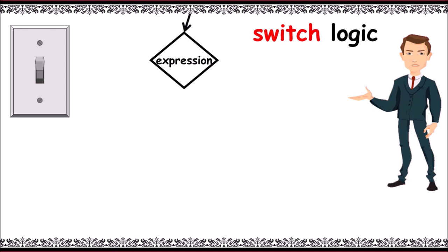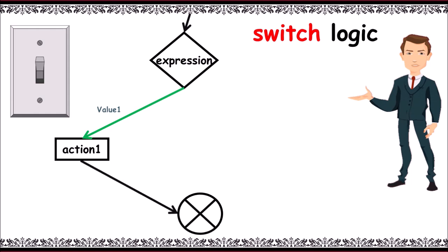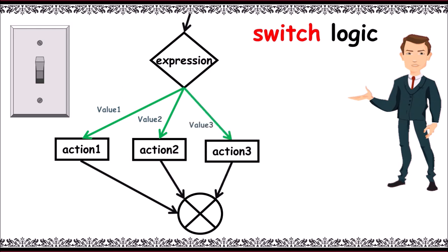Consider value 1 is given by the expression, then appropriate action 1 is performed and control gets exited. The same with value 2, action 2 is performed. With value 3, action 3 is performed. If none of the values is matched, it executes the default action.